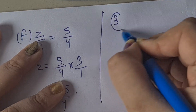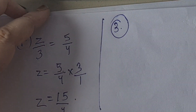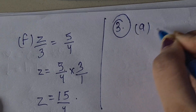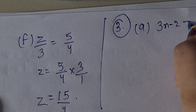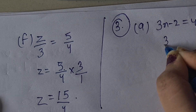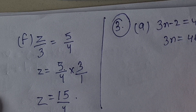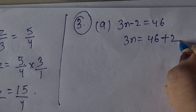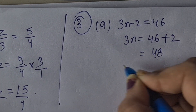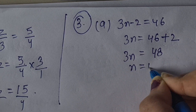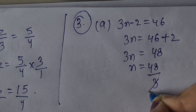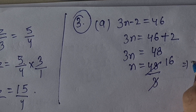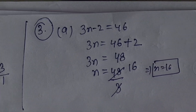Now Question 3: give the steps you will use to separate the variable, then solve. A: 3N minus 2 = 46. First, move the constant — so 3N = 46 + 2 = 48. Now 3 is in multiplication, so it goes to division: N = 48 upon 3 = 16. So N equal to 16 is the answer.